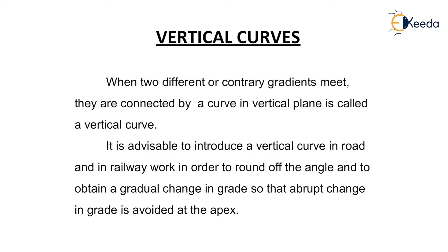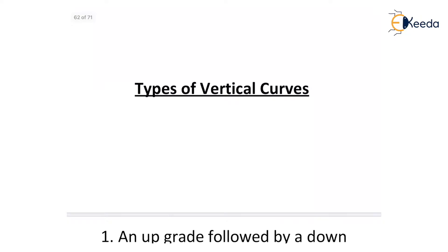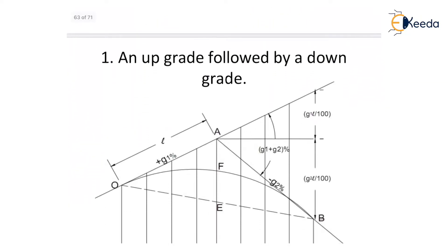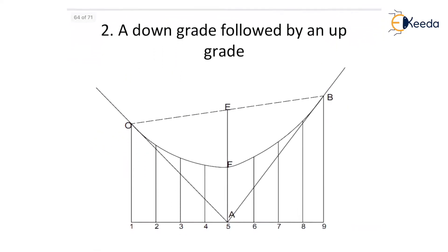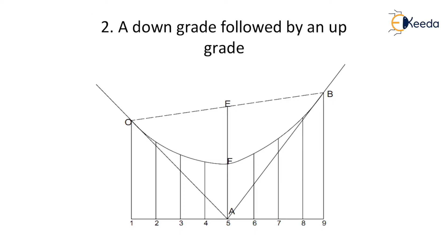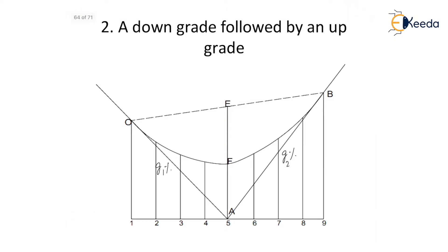There are four main types of vertical curves. The first type is an upgrade followed by a downgrade: as seen in the figure, OA is upgrade G1 followed by downgrade G2 at AB. The second type is a downgrade followed by an upgrade, where OA is G1 going downward and AB is G2 going upward.